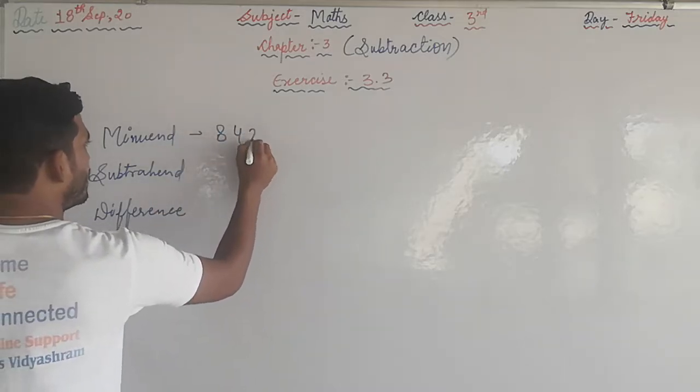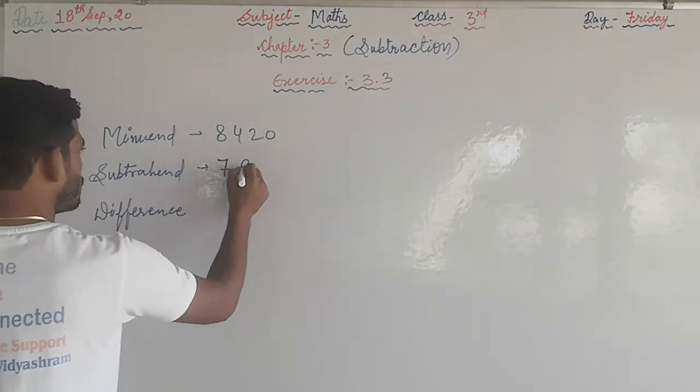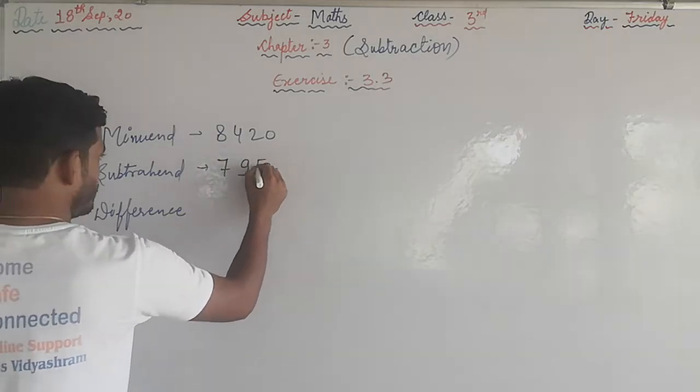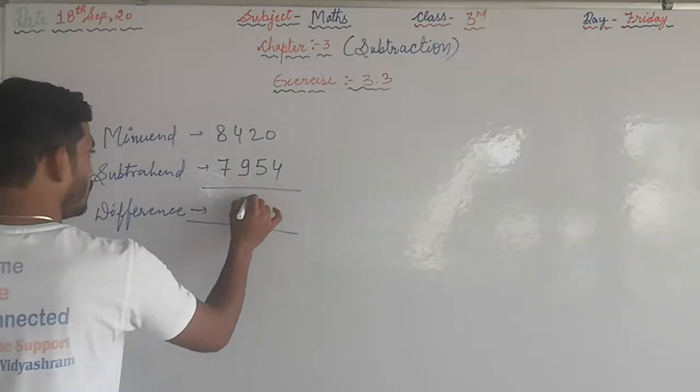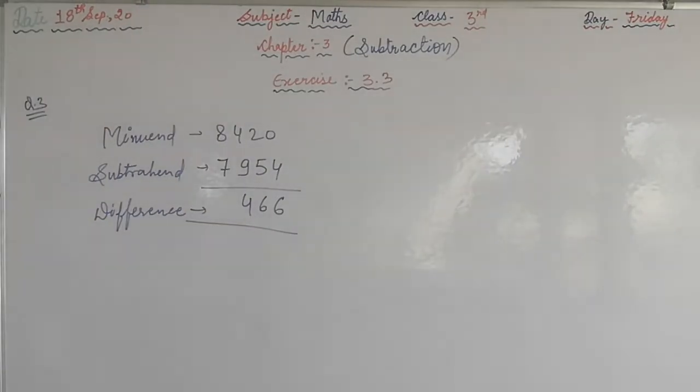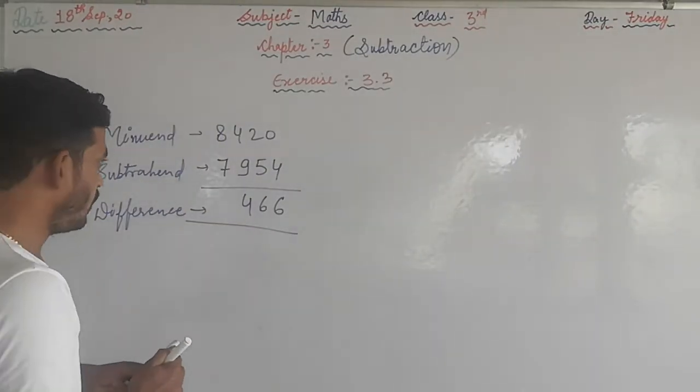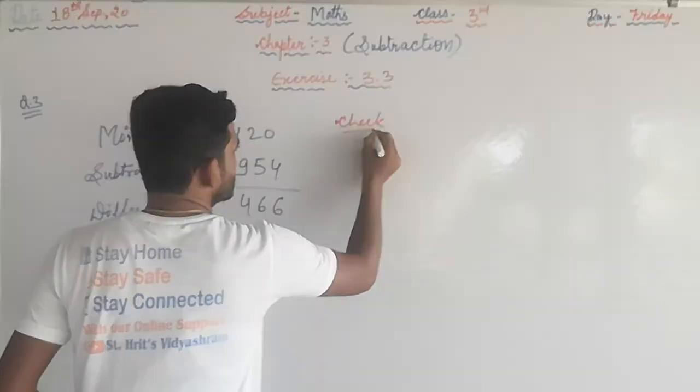And the subtrahend, 7954. What is the difference? That is 466. We have to check whether the solution is right or wrong. So we are going to check now. What do we have to do?